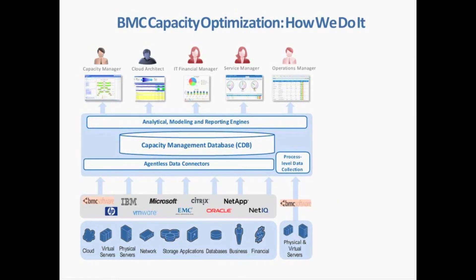What we see now is that different stakeholders in very different roles want to understand capacity. If you're a cloud architect, you want to do a cloud plan. If you're a financial manager, maybe you want a chargeback report — so you need business and financial data. The ability to connect to existing data sources, plus bring in financial data — dollars and cents — and business data such as orders per minute, trades per second, allows us to correlate performance data with business or financial data and provide a chargeback report to a financial analyst.